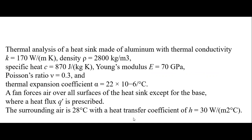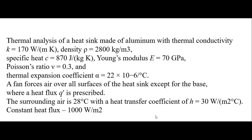Welcome. In today's class we'll see how to perform a thermal analysis of a heatsink. The given material is aluminum, with a thermal conductivity K of 170 W/m·K, density of 2800, E value of 70 GPa, and a thermal expansion coefficient. There is forced air flow over all surfaces of the heatsink except the base. The boundary conditions are: temperature 28°C, heat transfer coefficient 30 W/m²·°C, and a constant heat flux of 1000 W/m².